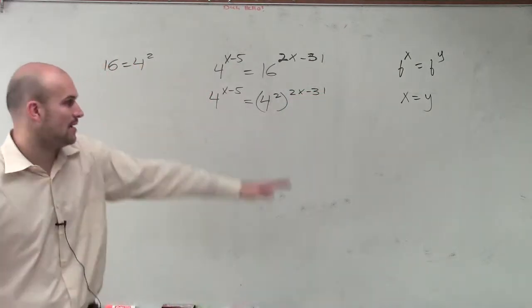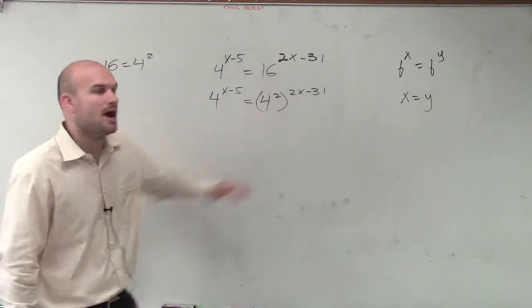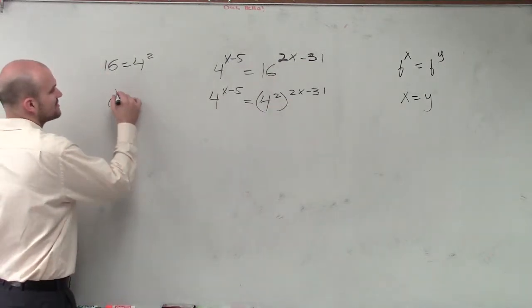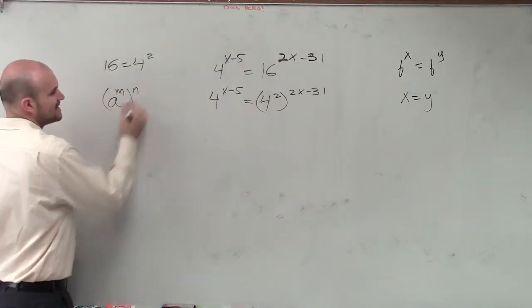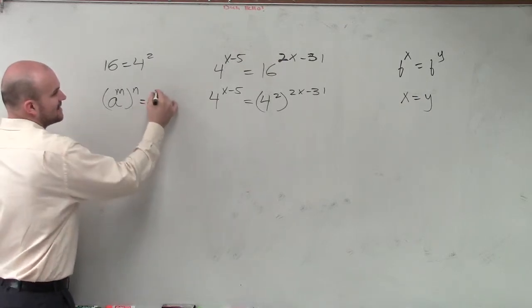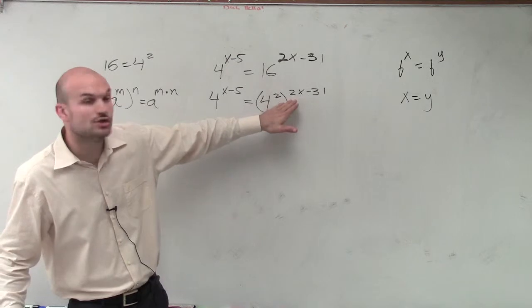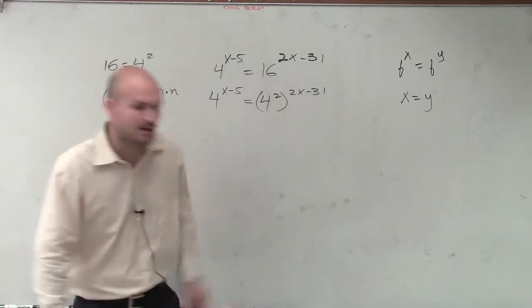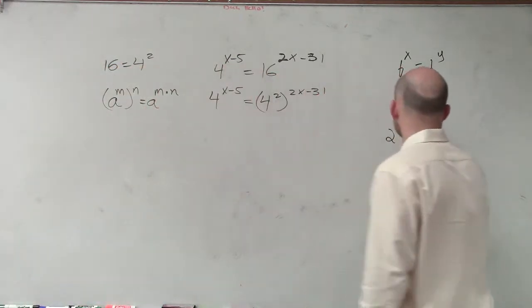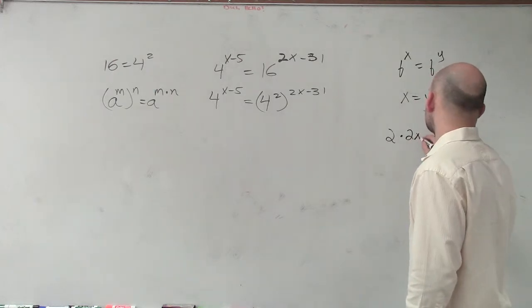Now what's helpful about that is now I can apply the power to power rule. Remember, the power to power rule says if I have a to the m raised to the n, that equals a to the m times n. So now what I'm going to do is I'm going to multiply 2 times 2x minus 31. So I'll write that over here, 2 times 2x minus 31.